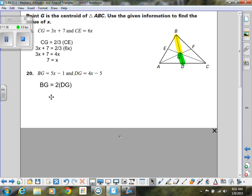So if we continue on, we're going to replace BG with 5X minus 1, and I'm going to replace DG with 4X minus 5. So I'm going to distribute that two, and then I'm going to get 8X minus 10. And I'm going to subtract the 5X. So that's going to give me 3X minus 10 on the right-hand side. And then I'm going to add the 10, and that gives me 9. One more step, we're going to divide by 3, and that gives me X equals 3. So we've got X for both of those.